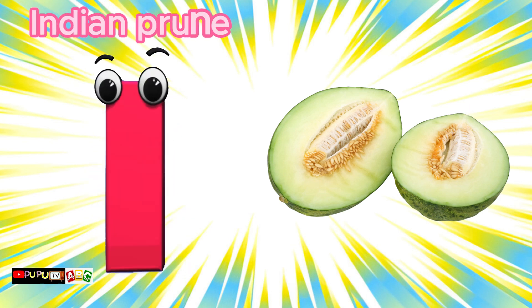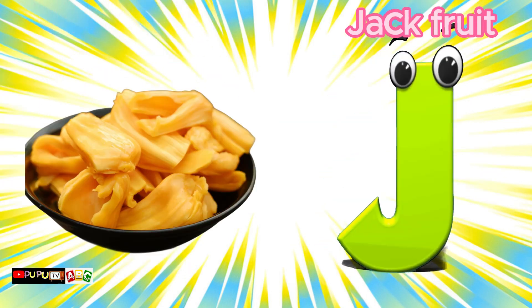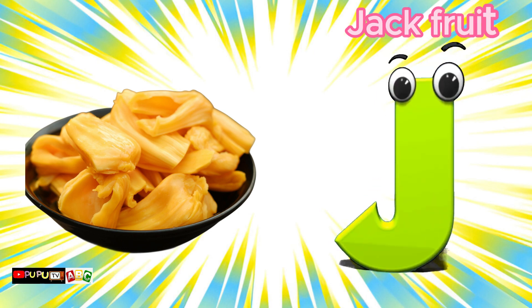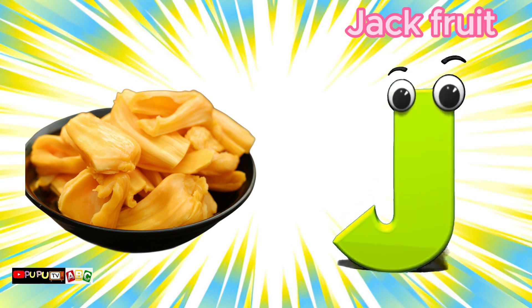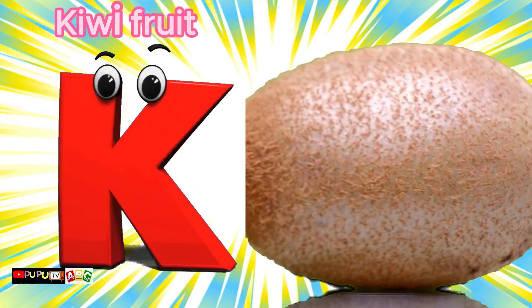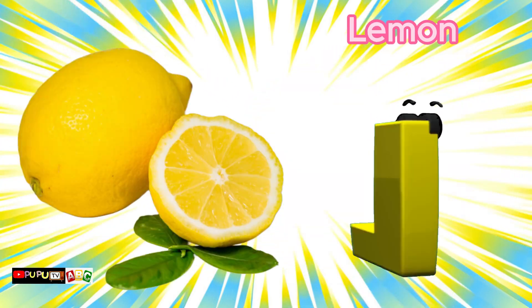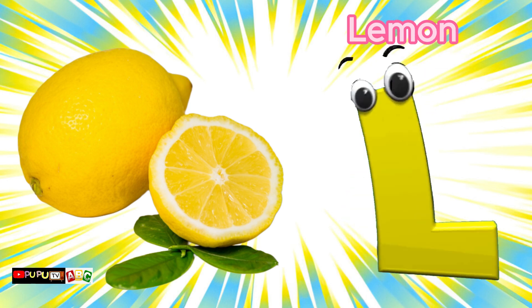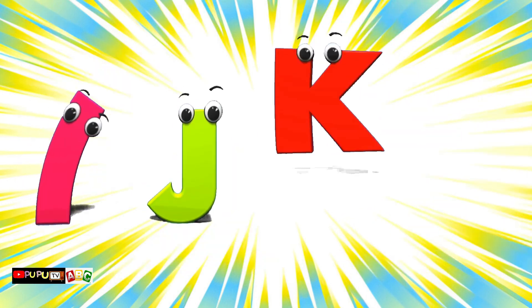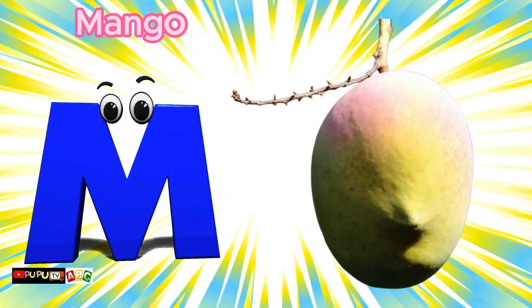I is for Indian Prune, I-I-Indian Prune. J is for Jackfruit, J-J-Jackfruit. K is for Kiwifruit, K-K-Kiwifruit. L is for Lemon, Lemon.